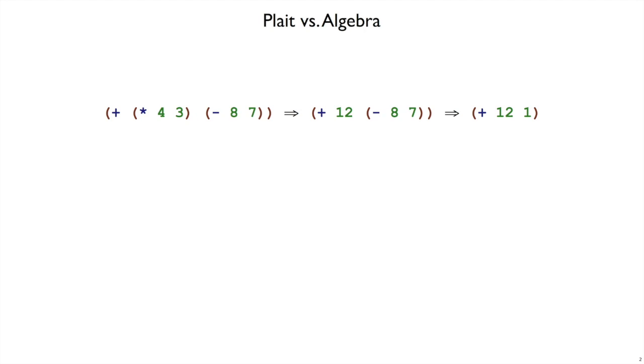We can think about plate evaluation the same way you learned in early school about how to evaluate arithmetic or algebra expressions. For example, if we have plus of times 4 3 minus 8 7, you can evaluate the plus 4 3 first to get 12, and that simplifies the expression overall. Then you can simplify the minus 8 7, and so on to eventually get 13.